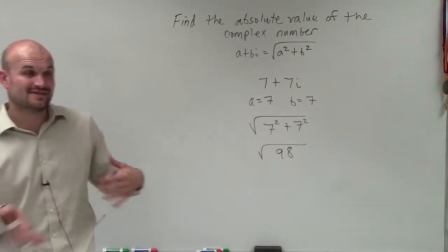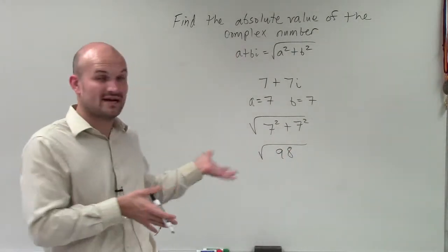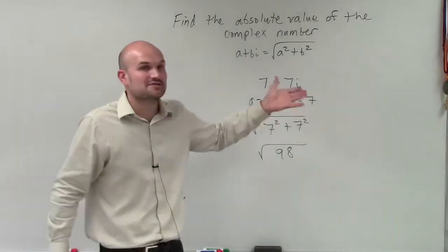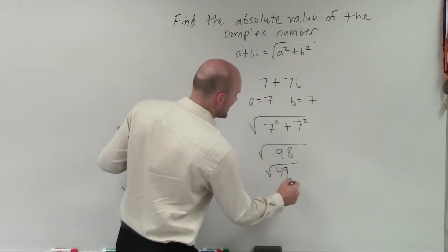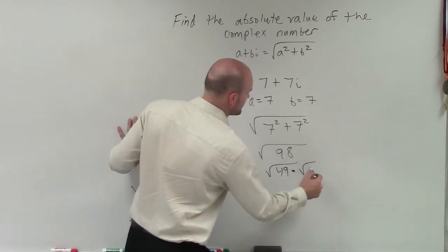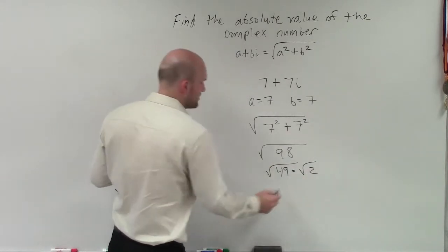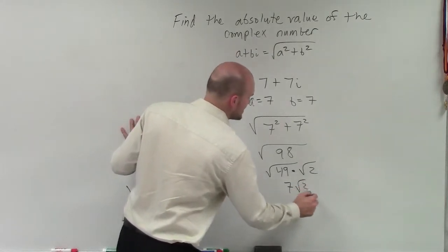Now, before I even just simplify or end my final, I need to see, can I simplify this? Well, obviously, we just added a square number plus another square number. So we know we can rewrite this as 49 times the square root of 2. And I can simplify the square root of 49 to 7 times the square root of 2.